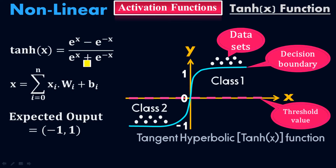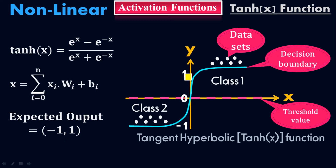We already know what the tangent hyperbolic function is in mathematics. The basic formula is e to the x minus e to the negative x, all over e to the x plus e to the negative x, where x equals the summation of the input times the weight plus bias. The expected output is between negative 1 and positive 1. Above the threshold value of 0 we have class 1, and below we have class 2. This curve is the decision boundary and these points are the data sets.